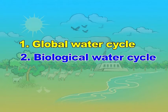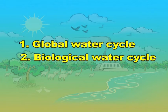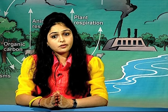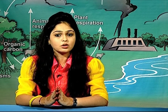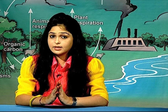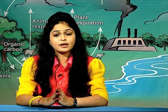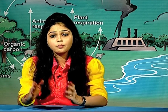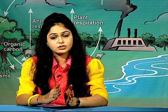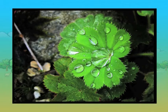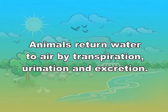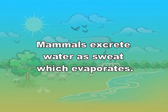In the biological water cycle, the source of water for autotrophs in terrestrial ecosystems is underground water. Roots of plants absorb water from soil and use it in different physiological processes. In aquatic life, plants and animals get water from the aquatic body in which they live. In terrestrial ecosystems, animals get water from reservoirs like rivers, ponds, lakes, etc., while humans get water from rivers and from groundwater via tube wells and pumps. Plants return water to the environment by transpiration. Animals return water to air by transpiration, urination and excretion. Mammals excrete water as sweat, which evaporates.